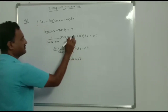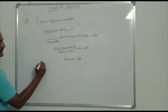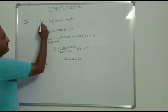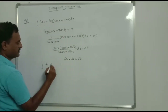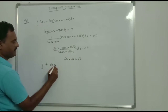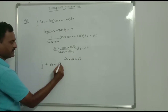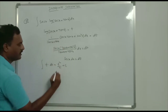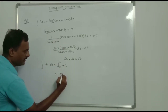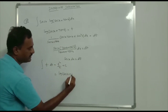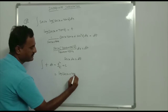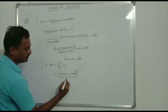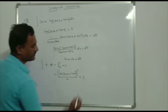Substituting: ln(sec x + tan x) = t and sec x dx = dt. Integration of t dt means t²/2 + c. Substituting t back: [ln(sec x + tan x)]²/2 + c.